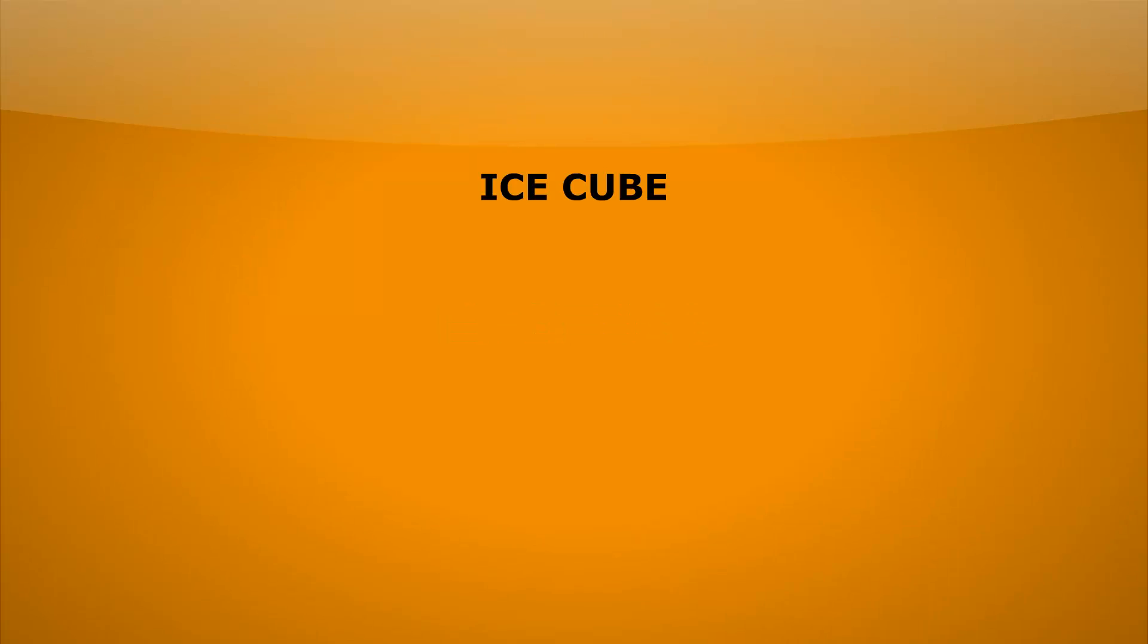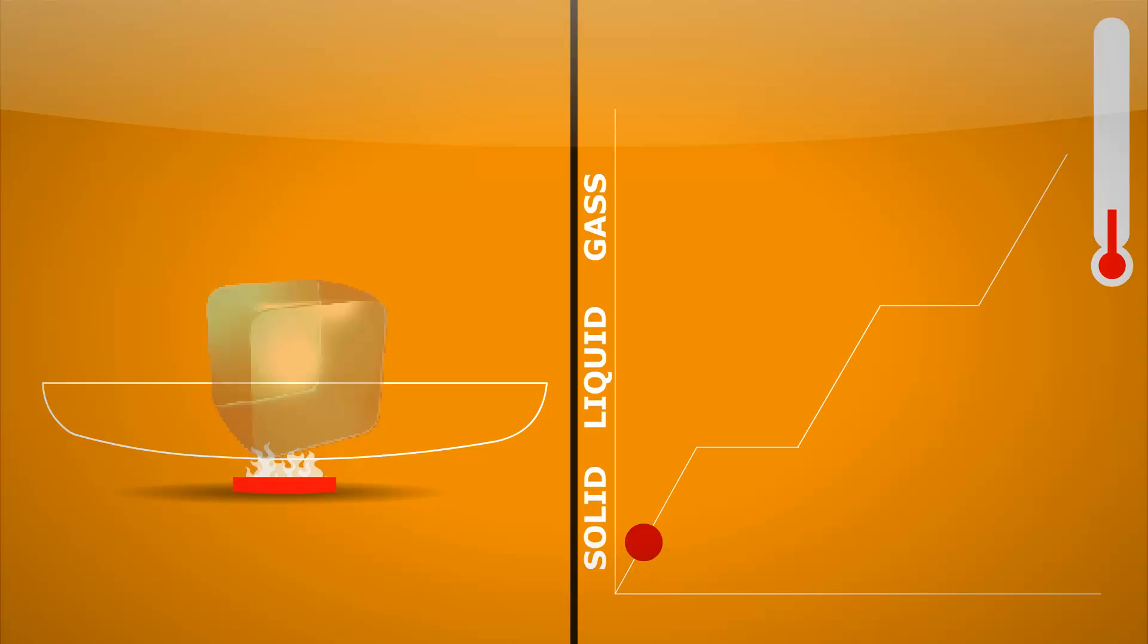We'll start with an ordinary ice cube. If we pop it in a beaker and then start to heat it, you'll see that as you heat it, the temperature of the ice starts to increase. And we can see that in the graph on the right hand side. So the ice is now starting to melt.